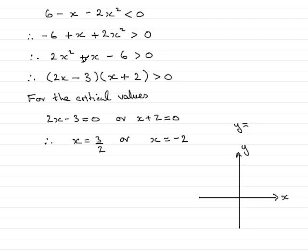Which was essentially 2x squared plus x minus 6 is greater than 0. So I'm going to look at the graph then of 2x squared plus x minus 6. So we'll just write that up here: 2x squared plus x minus 6.